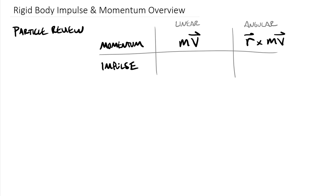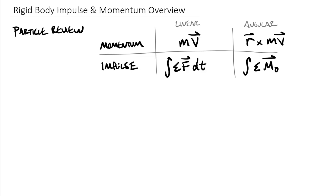For impulse, in the most general form, we can say it is the integral of the sum of our force vectors dt. One thing you'll notice about impulse-momentum versus work-energy is we are back into a vector system, similar to Newtonian kinetics — dealing with vectors versus scalars. And then angular impulse is the integral of the sum of our moments. All moments have to be about some point — we'll call that point O — as a vector dt. That's what we did for particles.